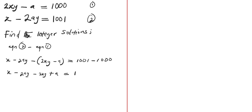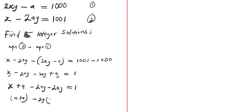We can combine the terms and factorize. We have x plus a, then negative 2ay minus 2xy equals 1. We can factorize the second part as negative 2y times (x plus a), giving us (x plus a) minus 2y(x plus a) equals 1, which factors as (1 minus 2y)(x plus a) equals 1.